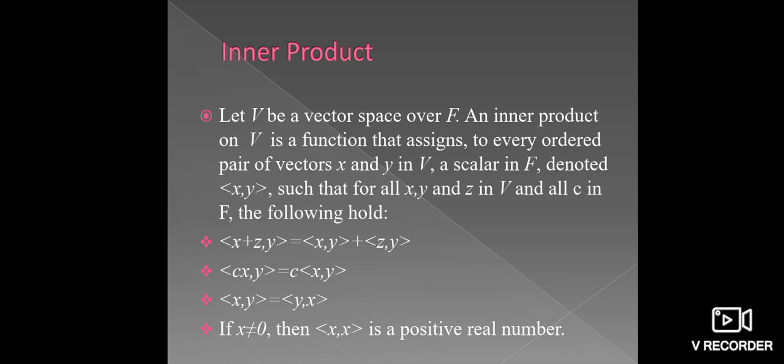Next: the ordered pair (cX, Y) equals c times the ordered pair (X, Y). Next: the conjugate of (X, Y) equals the ordered pair (Y, X). Finally, if X is a non-zero element, then the ordered pair (X, X) is a positive real number.